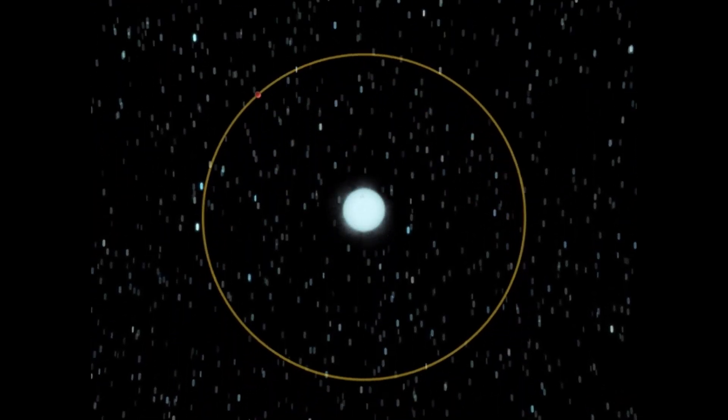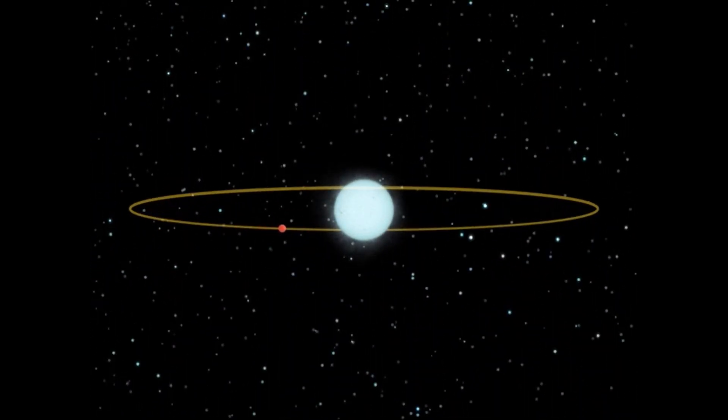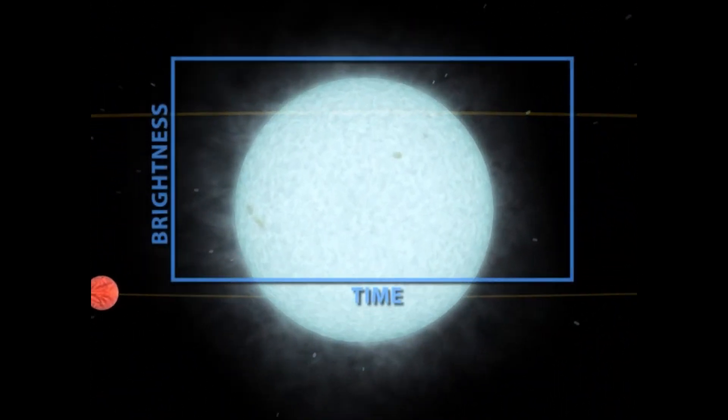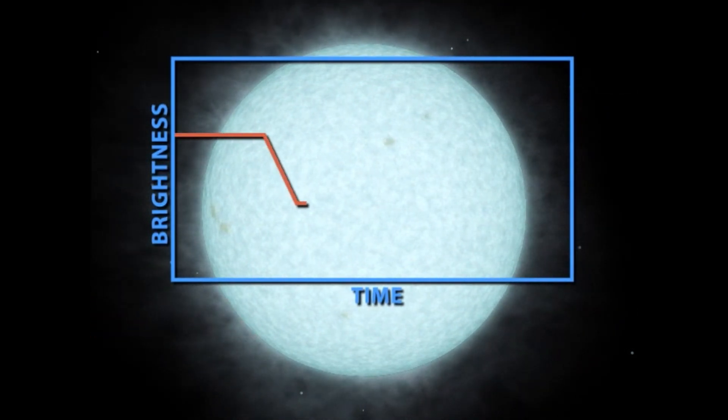But there is another, even more difficult measurement we can make using transit telescopes that are an important tool for learning about planets around other stars – Exoplanet Secondary Eclipses.